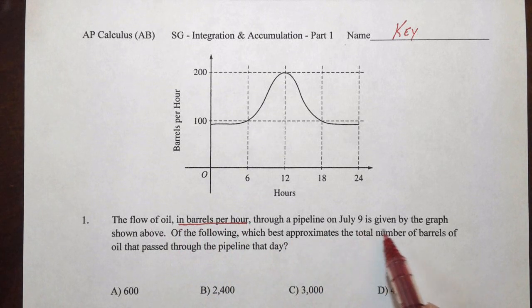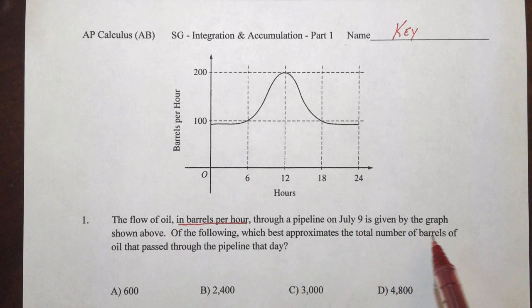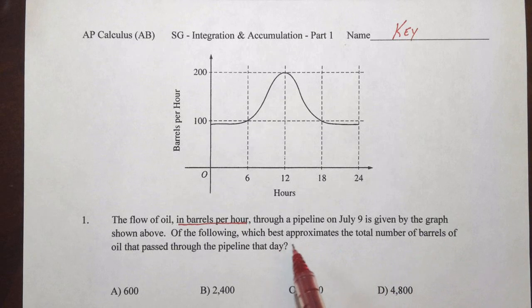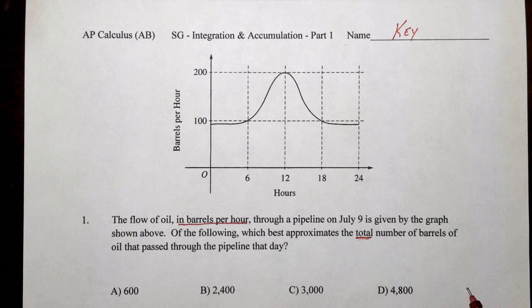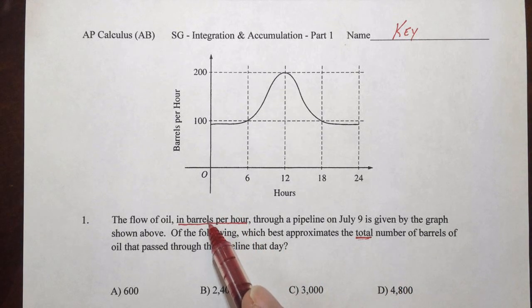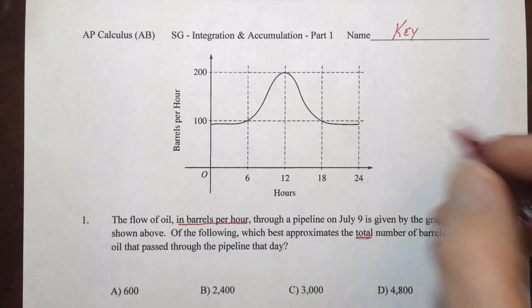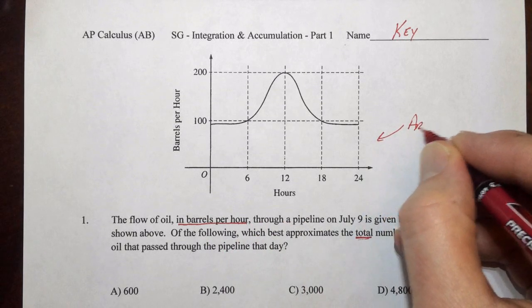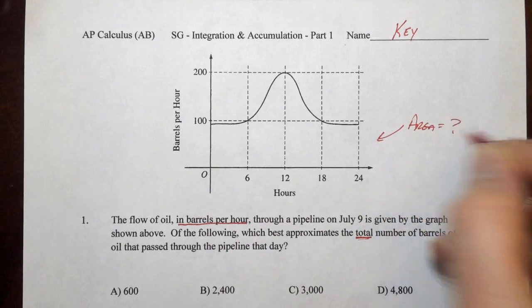Through a pipeline on July 9th is given by the graph shown above. Of the following, which best approximates, and here's the key word, the total number of barrels of oil that pass through the pipeline that day. So we are given the rate, but we want the total, which means we need to find the area under the curve.